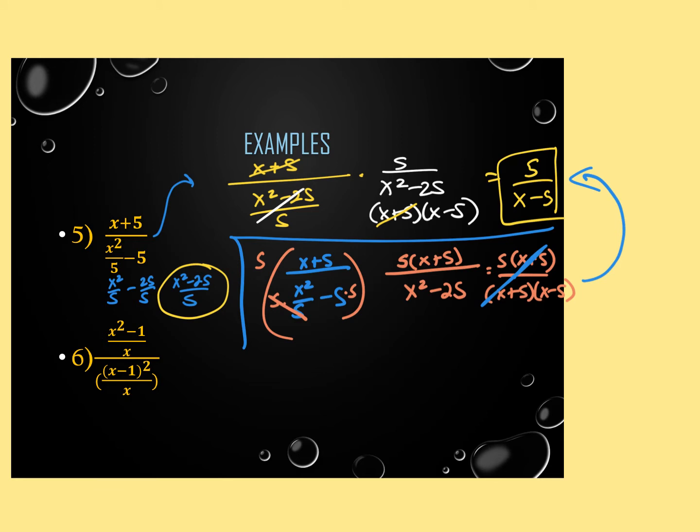Can you cancel the 5 since the (x-5) is in parentheses? No. Because it's (x+5) or (x-5), those parentheses are there even if not written. You can't cancel just part of a term — only if it was 5x would that work.